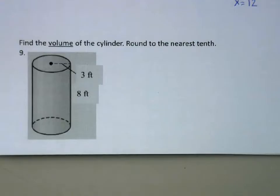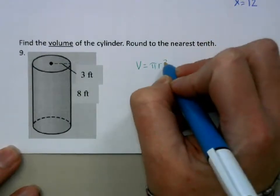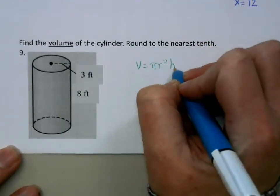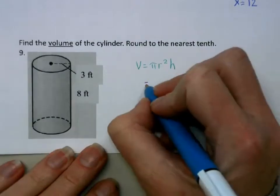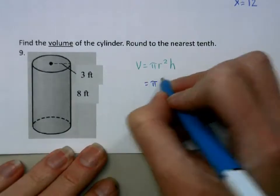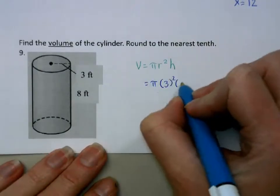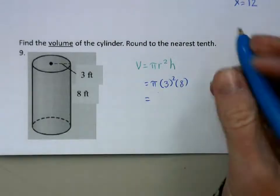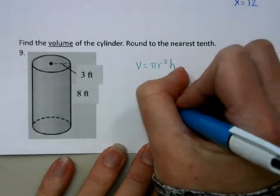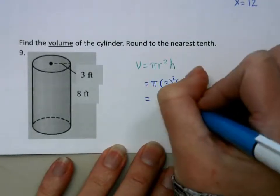The volume of a cylinder is πr²h. We plug in 3 for the radius and 8 for the height, and we get 226.2 feet cubed.